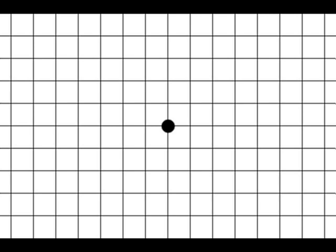An Amsler grid is simply a grid of 5mm squares with a central fixation dot in the middle. A normal grid is 10cm wide by 10cm high. To print one out, just google Amsler grid PDF.